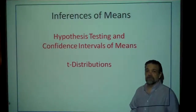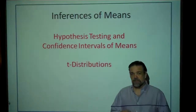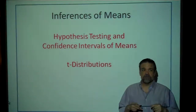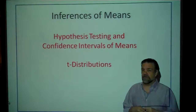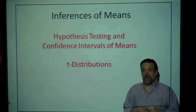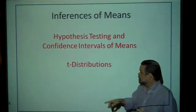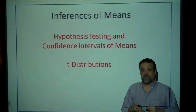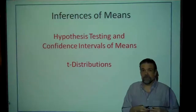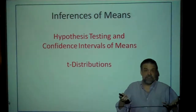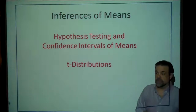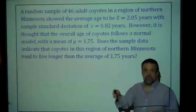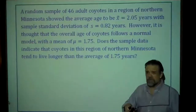Hey stats students, time for another video. This one is going to be over the inference of means. We've looked at the inference of proportions and the inference of the difference of proportions. This time we're going to be looking at one-sample t-tests. We're going to use t-distributions to test the mean of a population and to come up with confidence intervals. Let's jump right into it with an example.